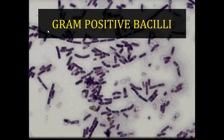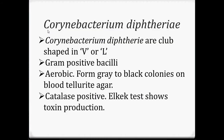The first bacteria we are going to look at is Corynebacterium diphtheriae. Corynebacterium diphtheriae are club-shaped gram-positive bacilli. They are aerobic and form gray to black colonies on blood tellurite agar, also known as Hoyle's agar, which is a selective media that uses tellurite to differentially select Corynebacterium diphtheriae from other upper respiratory tract flora. Tellurite is a rare oxide mineral composed of tellurium oxide; its name comes from 'tellus,' which is Latin for earth. It is catalase positive and the Elek test shows toxin production.